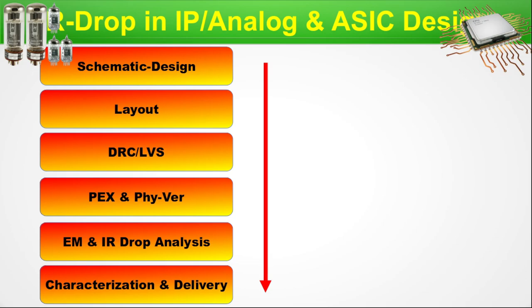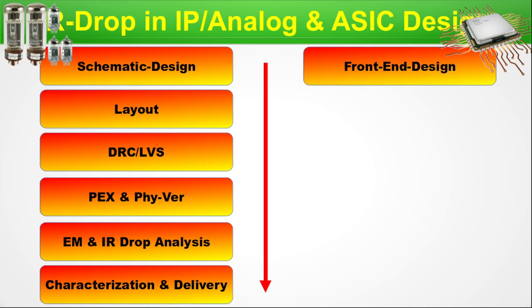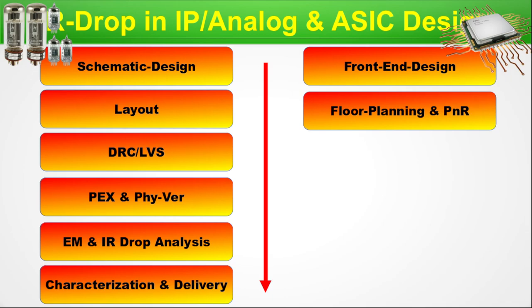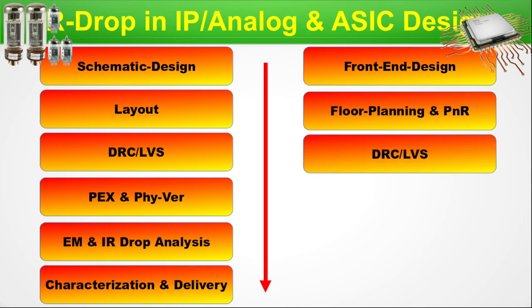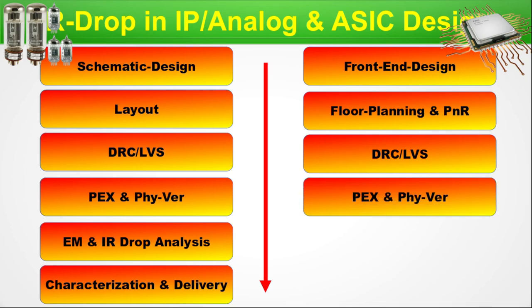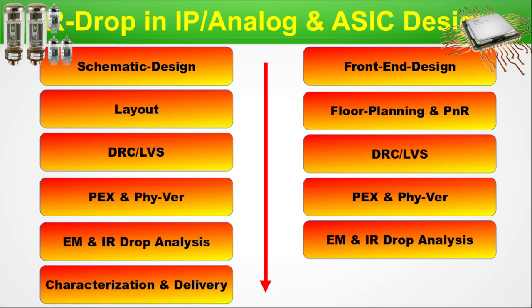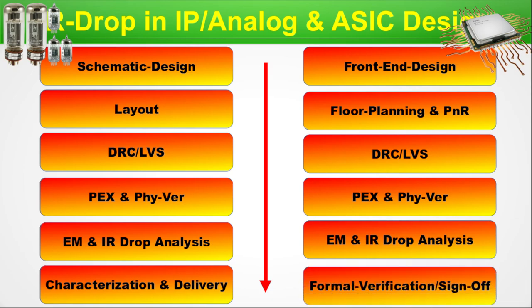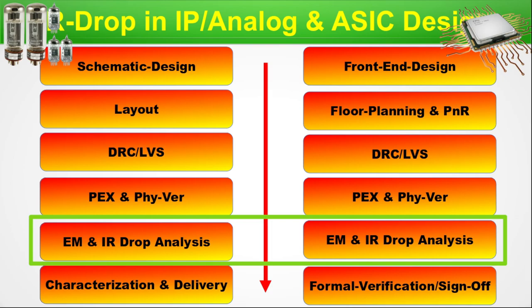Moving to the ASIC design flow: first there is the front-end design part, then floor planning and PNR. As we proceed to the backend, we do DRC and LVS checks after the floor planning and layout is done to ensure the layout is clean. Next, parasitic extraction (PEX) and the rest of physical verification checks are performed. Then EM and IR drop analysis are done. Finally, formal verification and sign-off. IR drop analysis is thus performed at both the IP level and ASIC design level in this highlighted step.